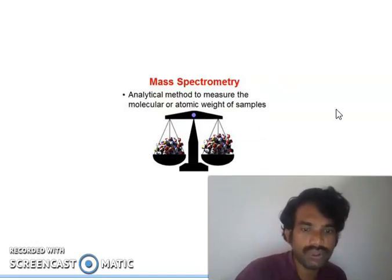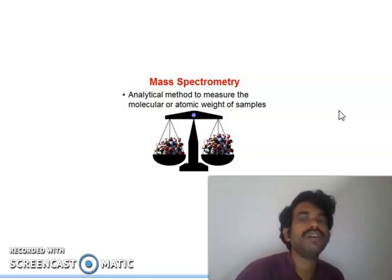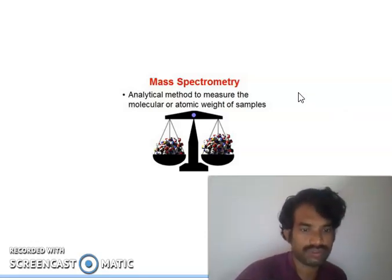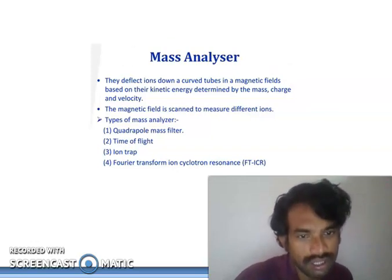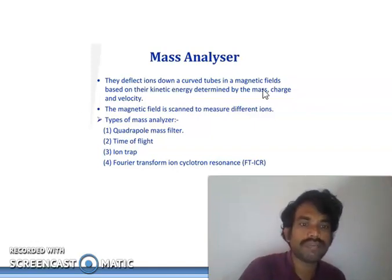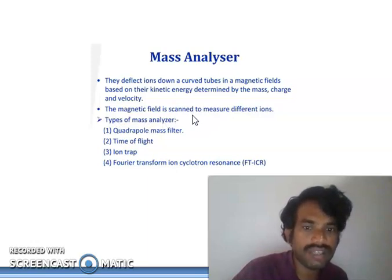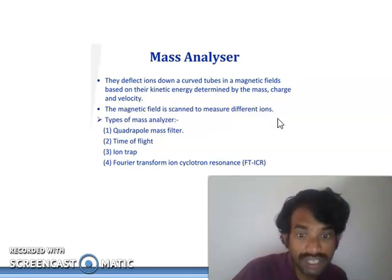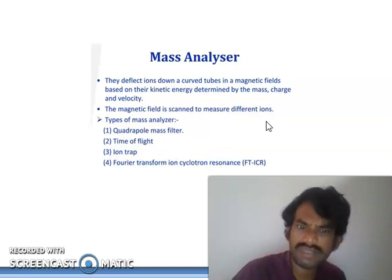Mass spectroscopy is one of the analytical measures of the atomic weight of the sample — simply, it measures the weight of molecules or atomic compounds of our sample. The mass analyzer is an important topic. Ions are deflected down curved tubes in a magnetic field based on their kinetic energy, determined by mass, charge, and velocity. Types of mass analyzer include: quadrupole mass filter, time of flight, ion trap, Fourier transform ion cyclotron resonance.